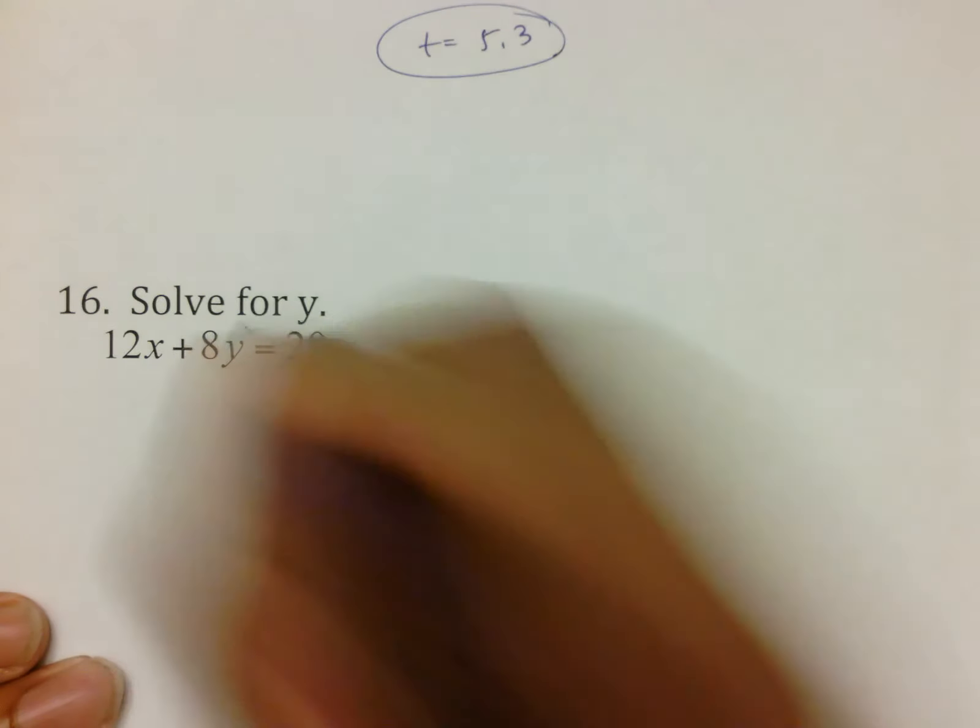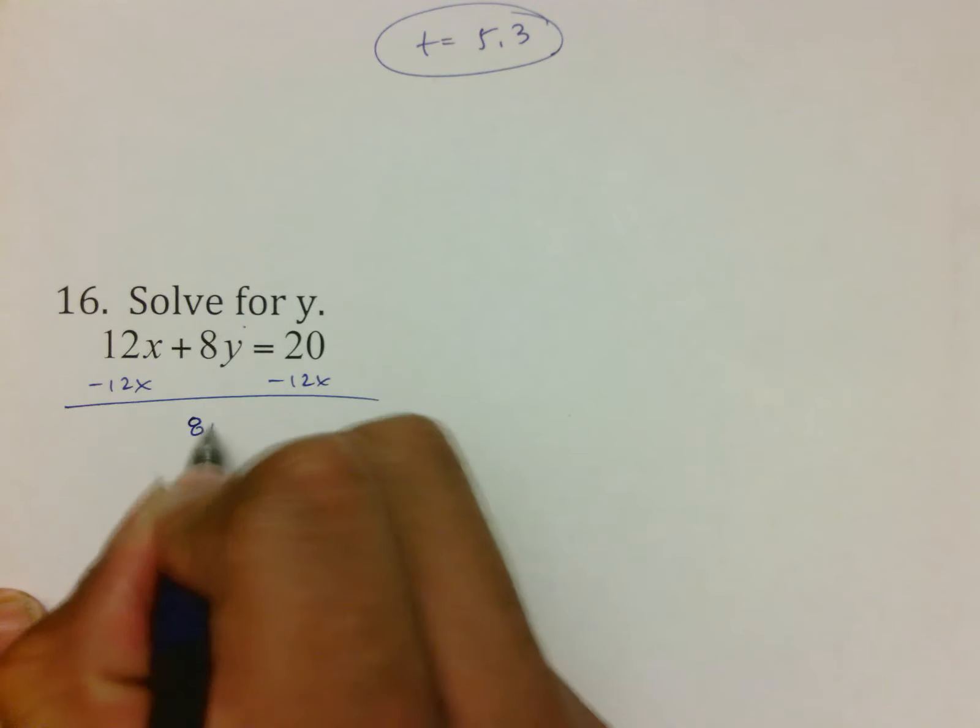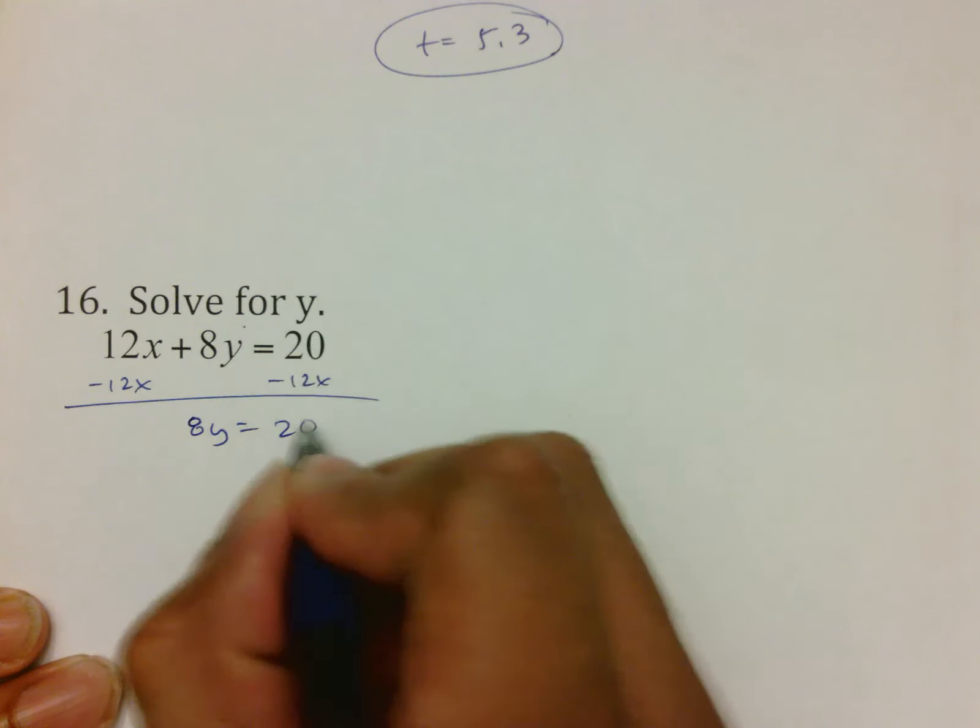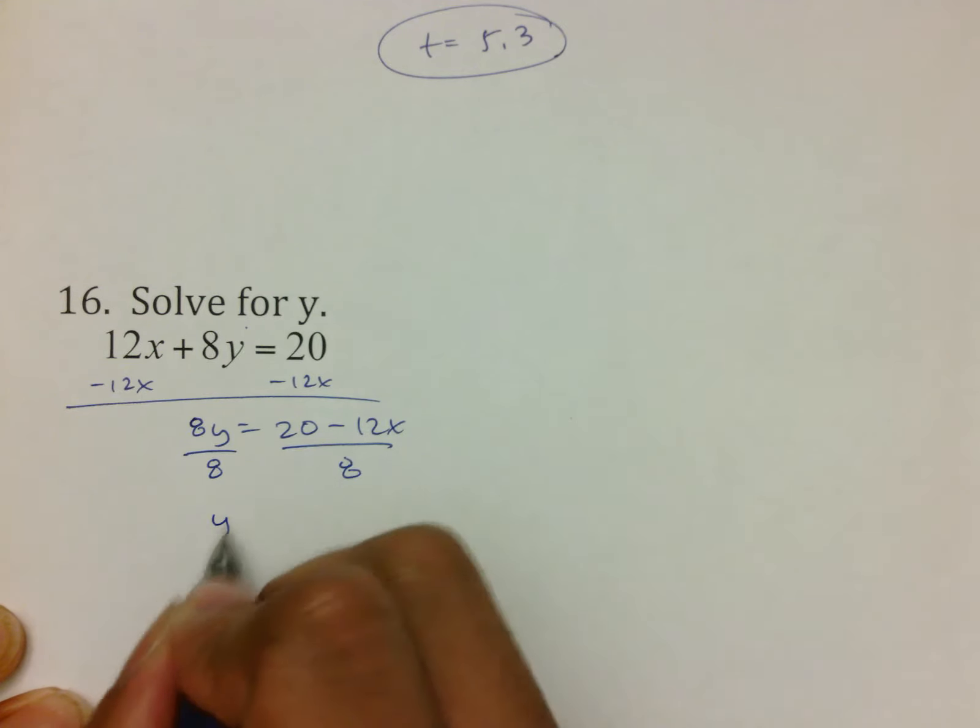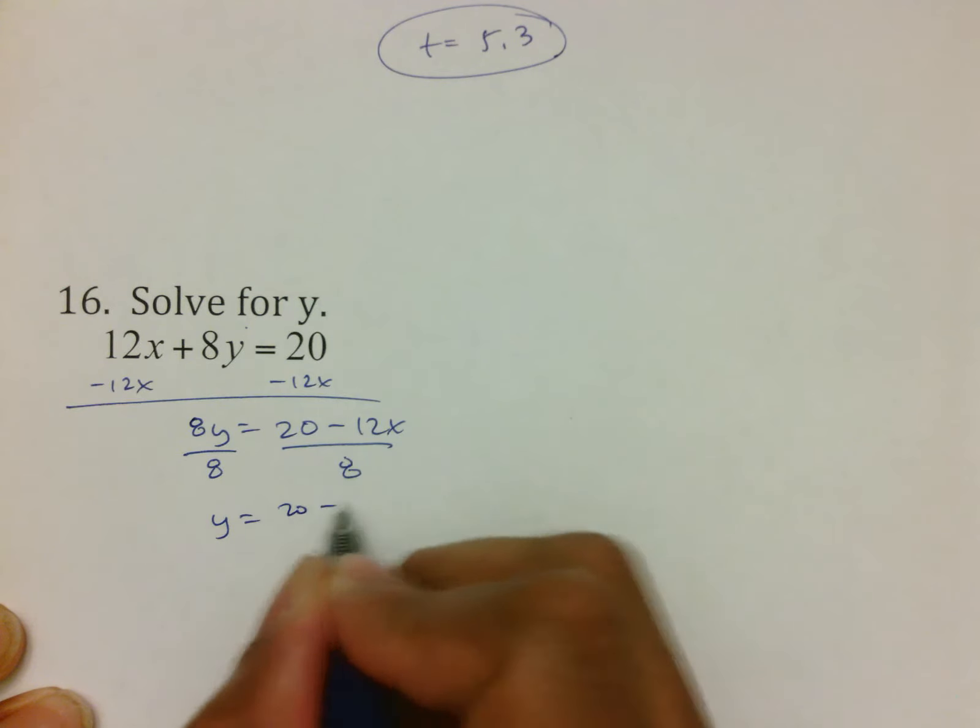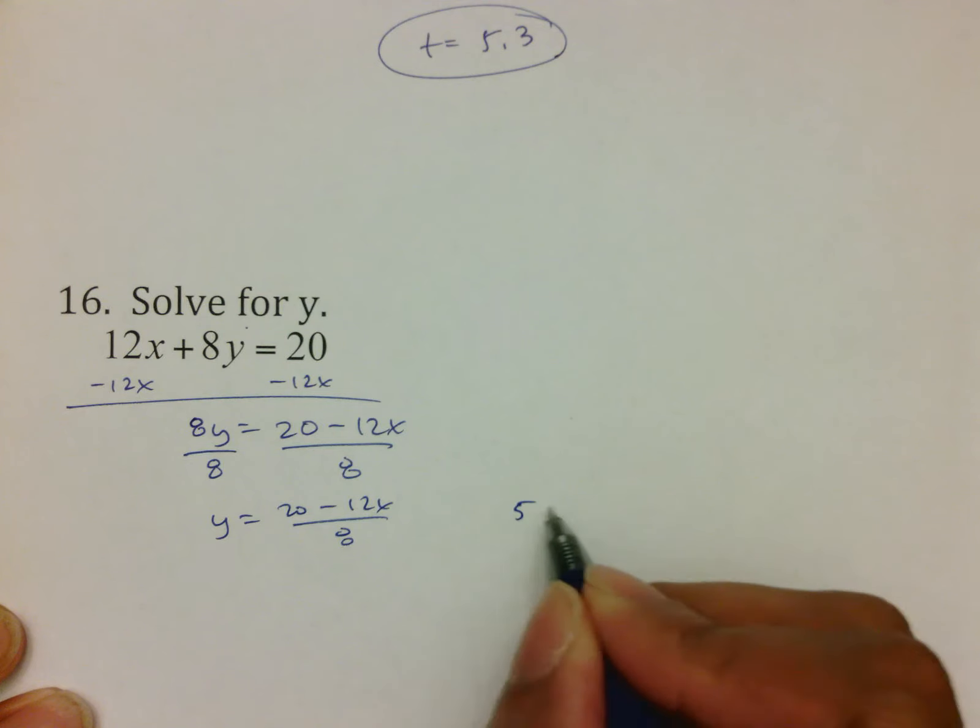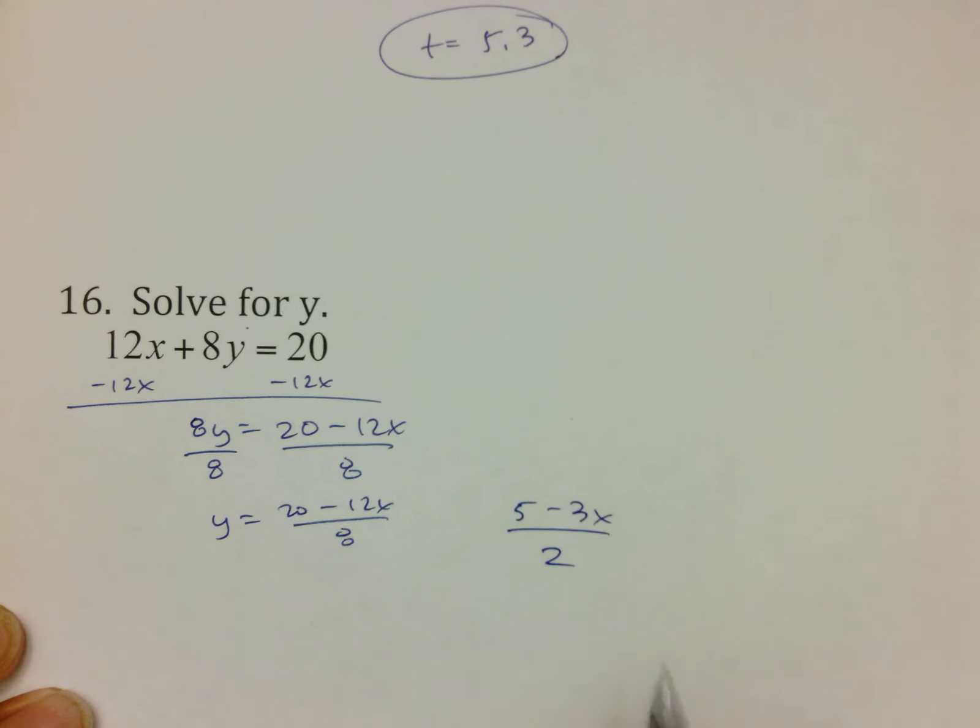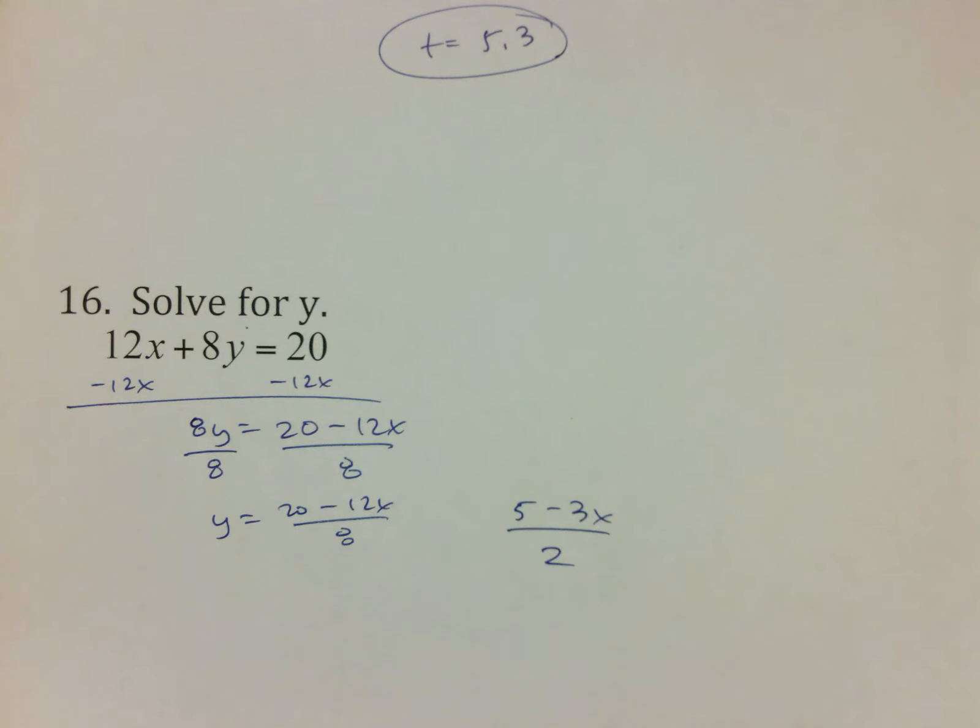Solve for Y here means I want Y by itself. If I want Y by itself, the first thing I have to do is move 12X by subtracting it, bringing down 8Y equals 20 minus 12X. You then divide by 8. There is a trick here that you need to be careful of. I would accept 20 minus 12X over 8, but you might see somebody say that this is going to be 5 minus 3X over 2, because all three of these numbers divide by 4. 20 divided by 4 is 5, 12 divided by 4 is 3, 8 divided by 4 is 2, and so either one of those two answers would work.